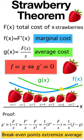If capital F of X is the total cost of X strawberries and f of X is the marginal cost, and g of X is capital F over X, the average cost,